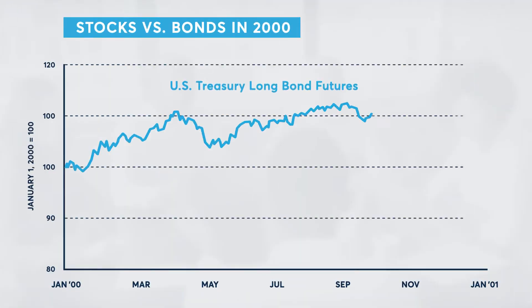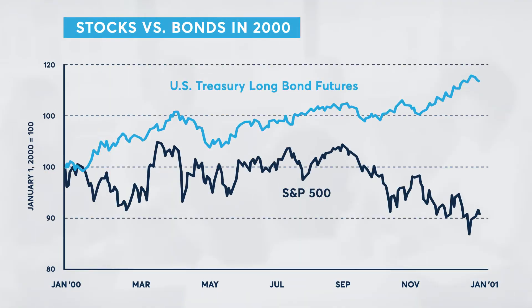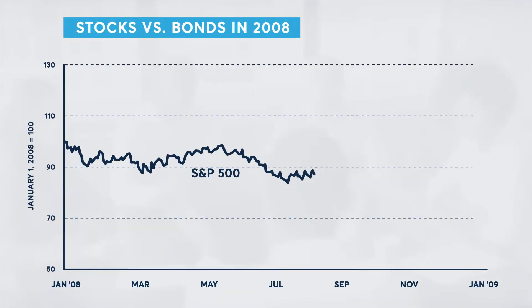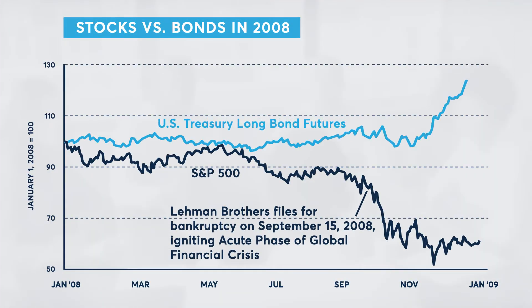In 2000, during the contested election, stocks suffered — they fell about 7% and bonds rallied. It was also right on the eve of the tech wreck recession, which was the context at that time. Similarly, in 2008, stocks plunged after the election as the economy was still collapsing in the global financial crisis, but bonds scored. That all reversed out a few months later in an enormous fashion.